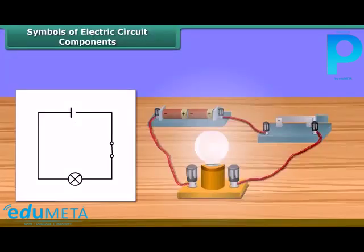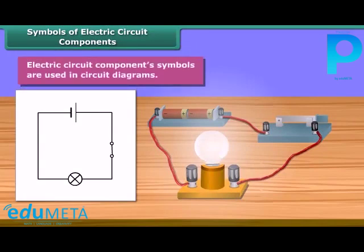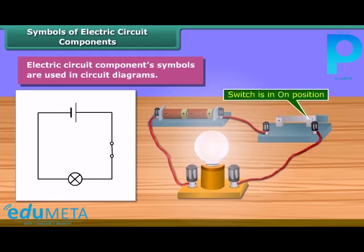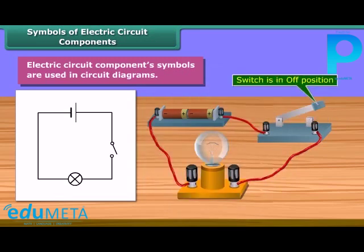Electric circuit component symbols are used to make circuit diagrams. It is much easier to represent a circuit diagram using symbols. This is the symbol of a switch in the on position; this one is in the off position.